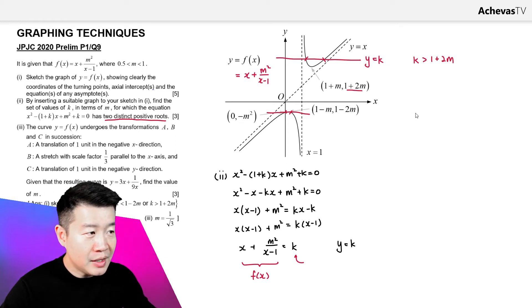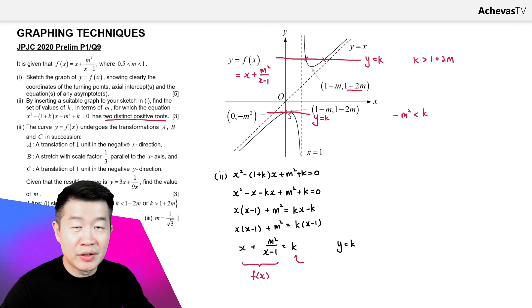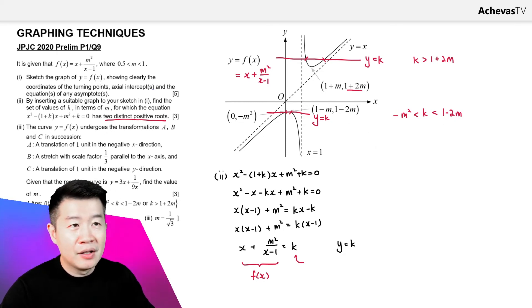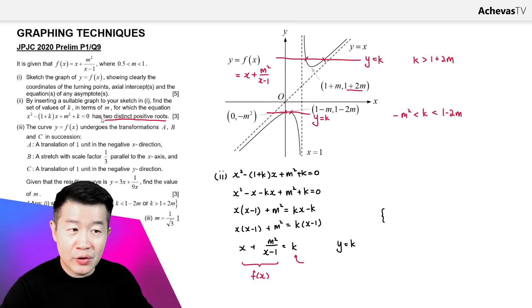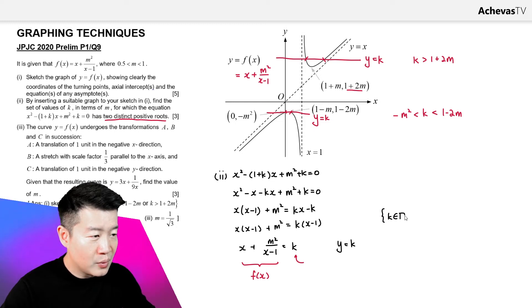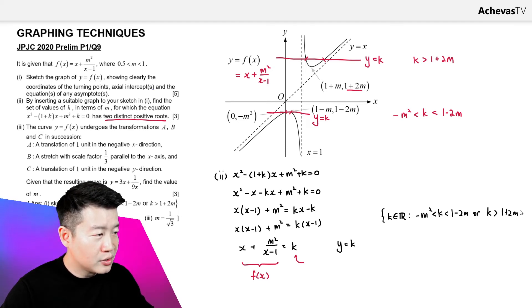Therefore the set of values of k for two distinct positive roots is: −m² < k < 1 − 2m, or k > 1 + 2m.